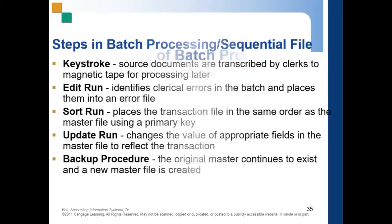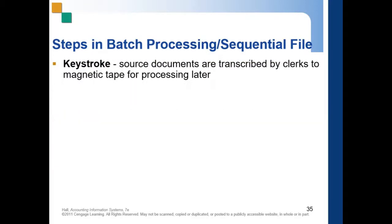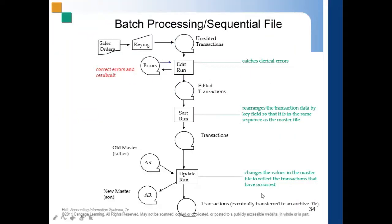Regarding the backup procedure: going back — your old master file and your new master file. The old master file is not completely deleted or overwritten; it still exists alongside the new master file. This is the father-and-son concept — a classic example of backup procedures in batch processing.